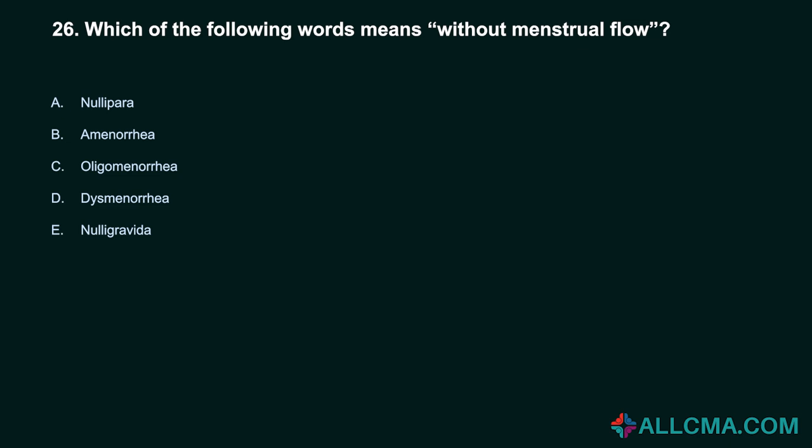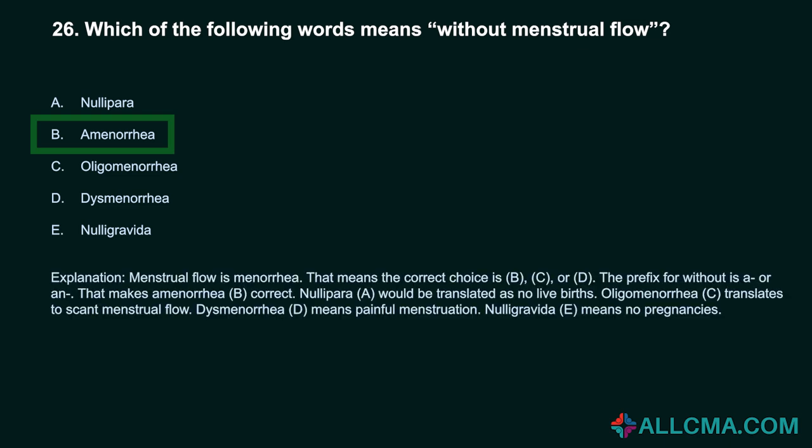Question 26: Which of the following words means without menstrual flow? A. Nullipara. B. Amenorrhea. C. Oligomenorrhea. D. Dysmenorrhea. Correct answer: B. Amenorrhea, meaning without menstrual flow. Nullipara translates as no live births. Oligomenorrhea translates to scant menstrual flow. Dysmenorrhea means painful menstruation. Nulligravida means no pregnancies.